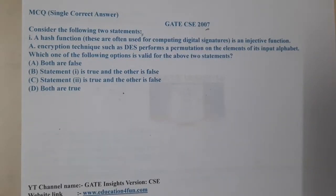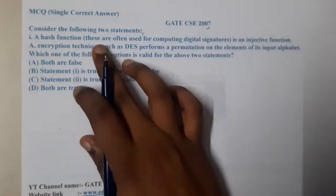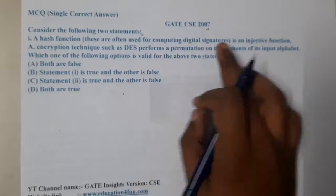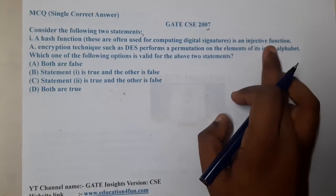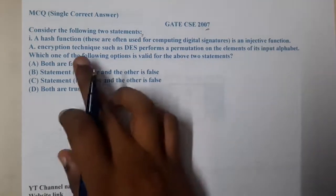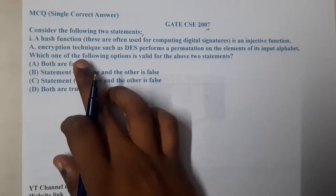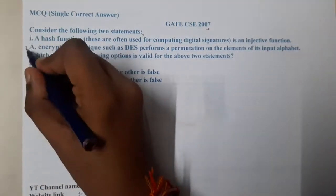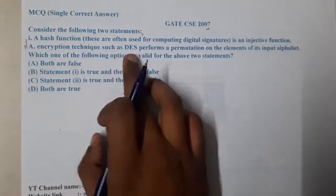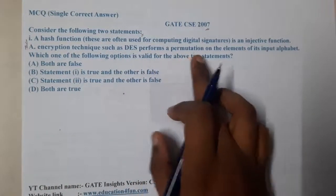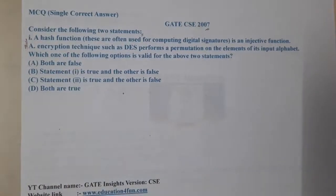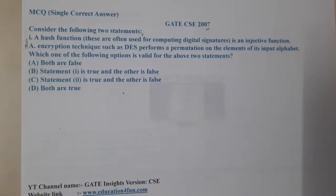Statement one: a hash function, often used for computing a digital signature, is an injective function. Statement two: an encryption technique such as DES performs a permutation on the elements of its input alphabets. Which of the following two statements is true?